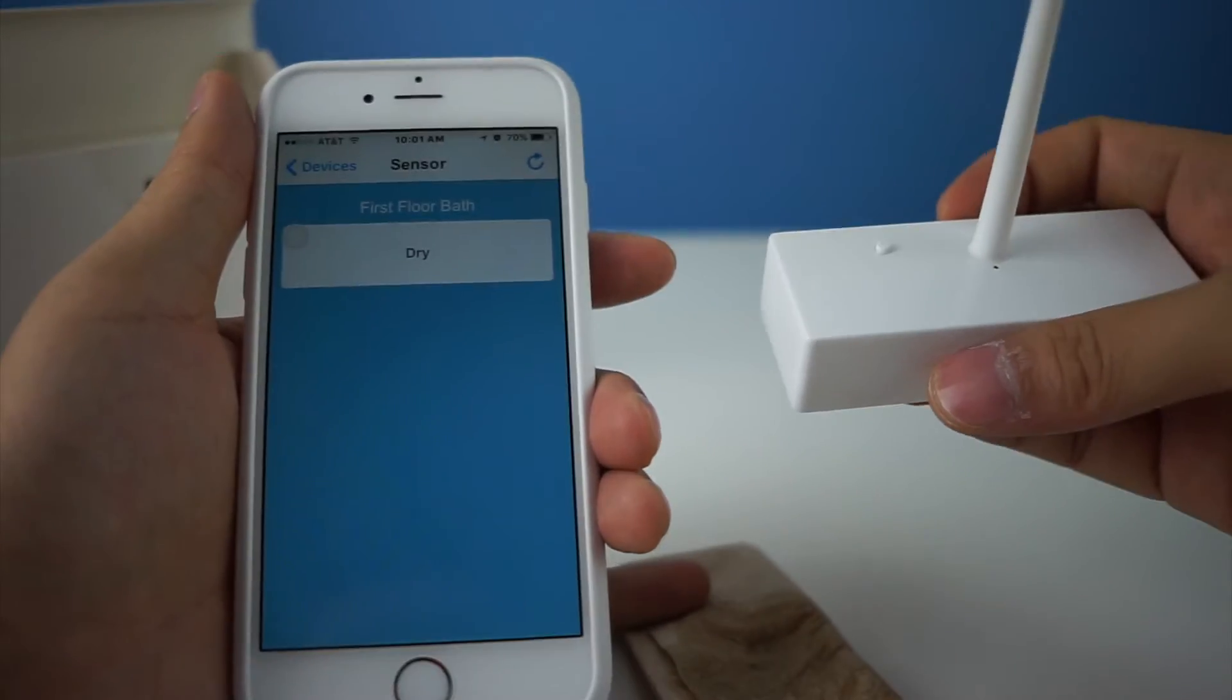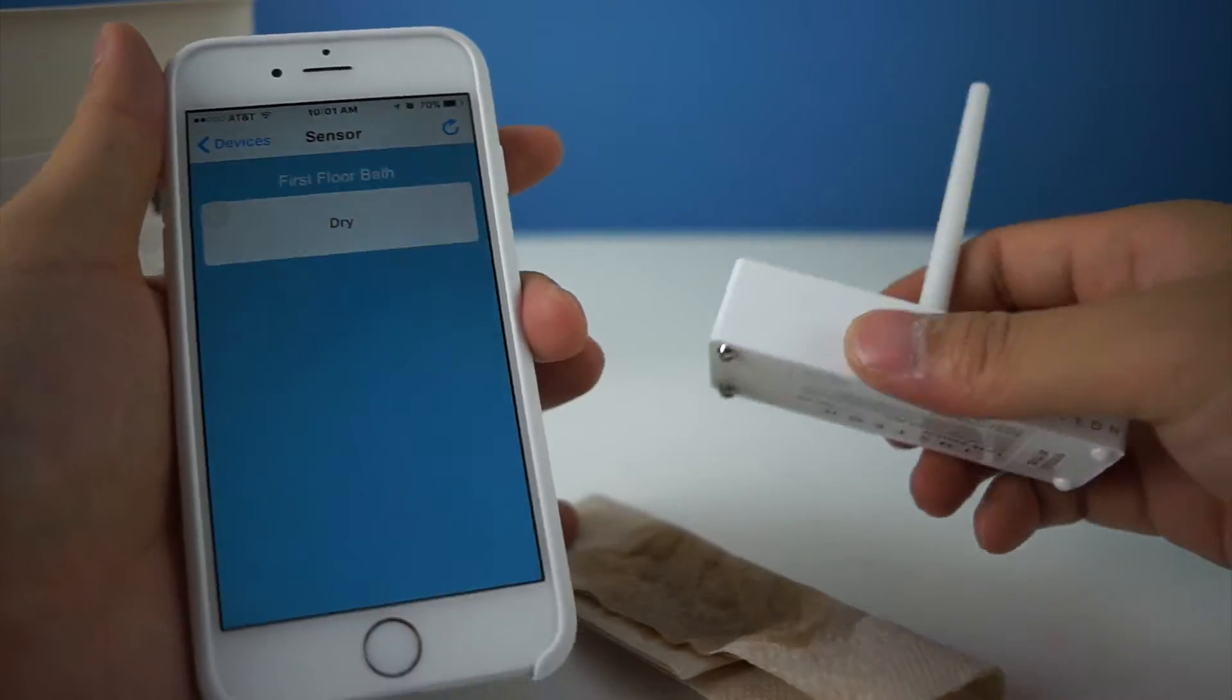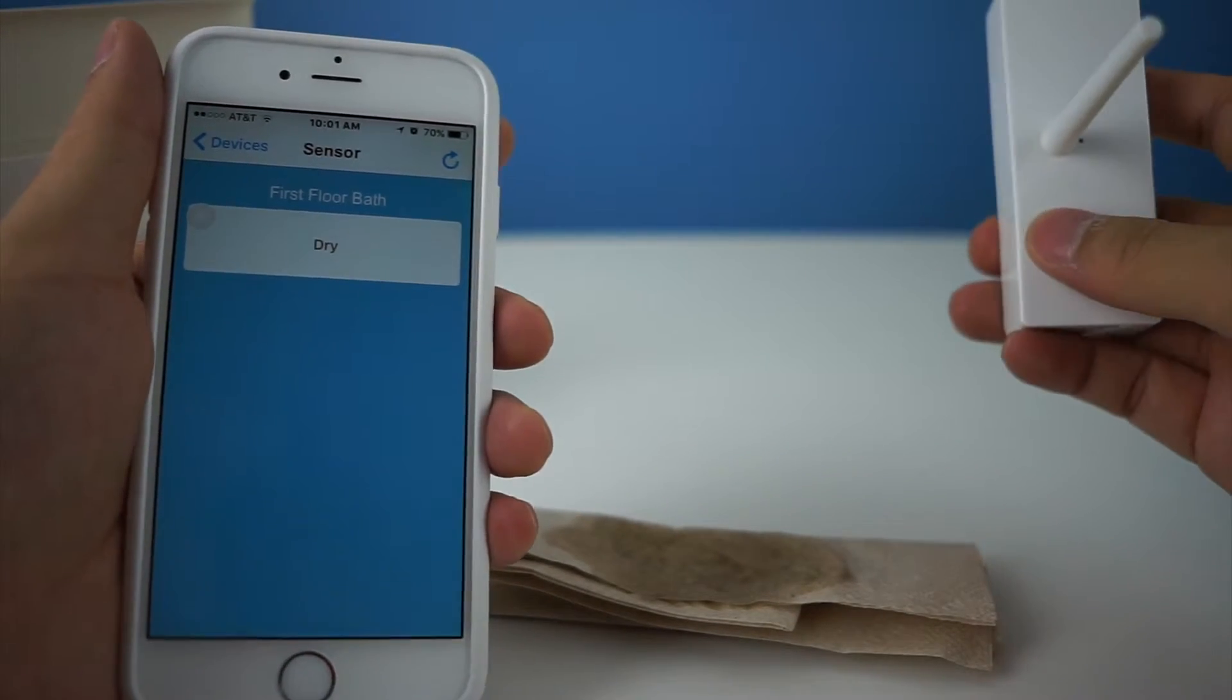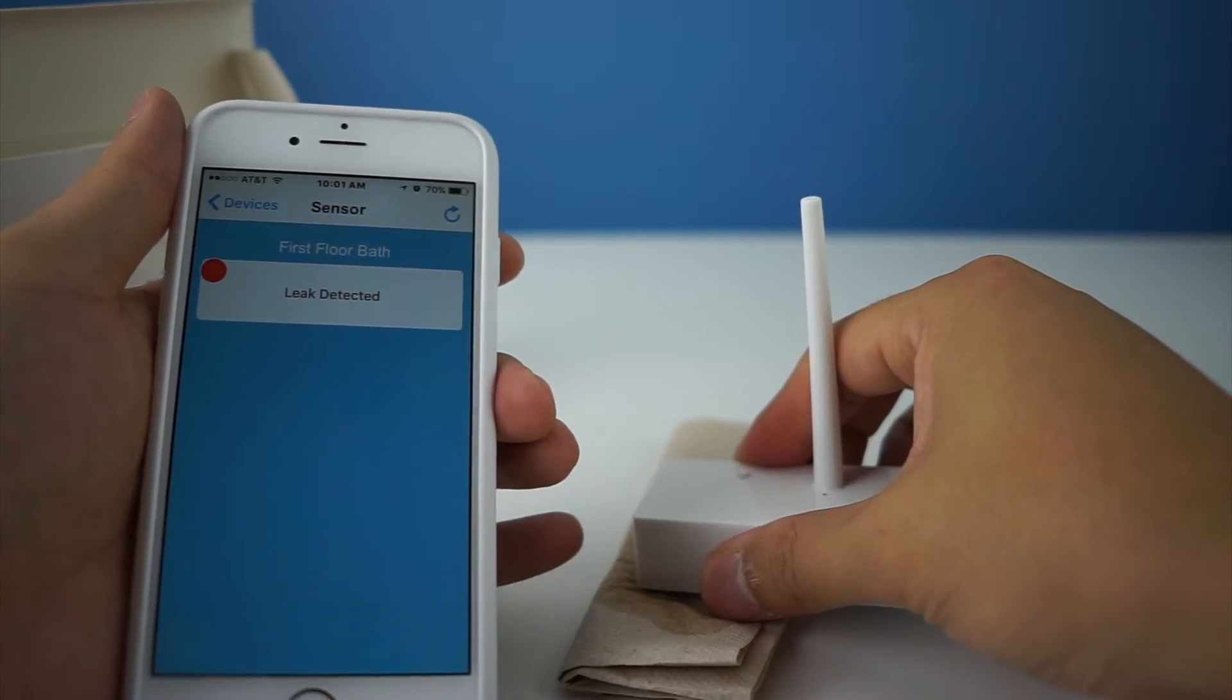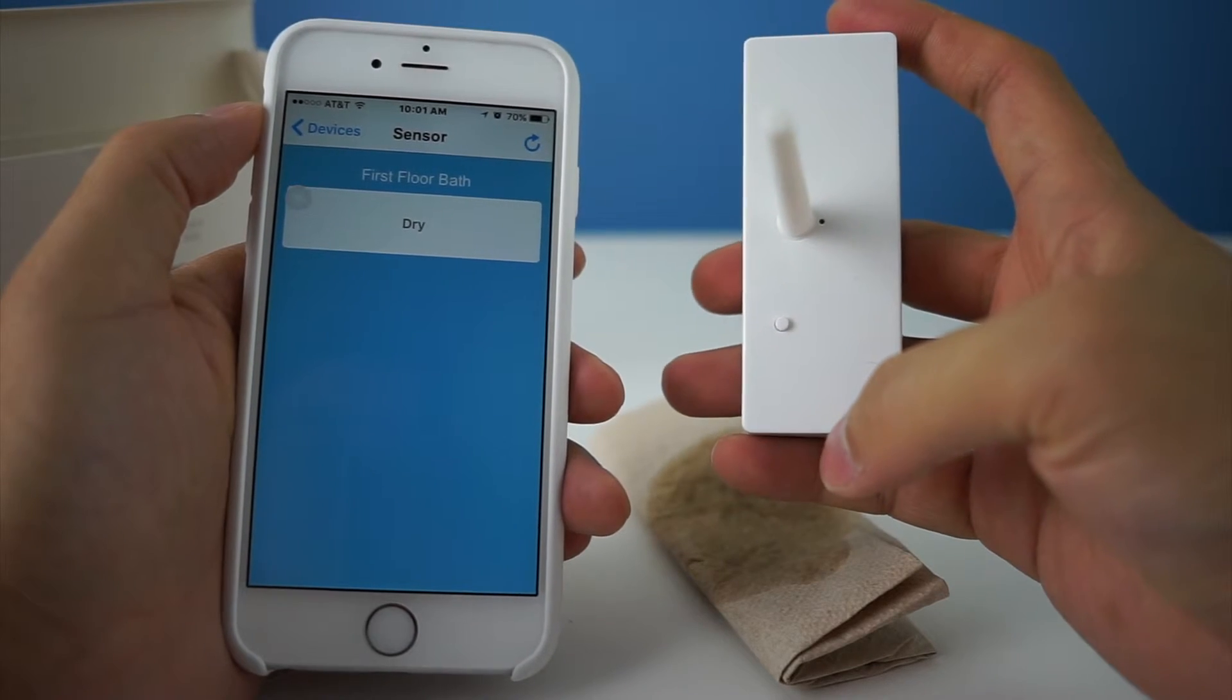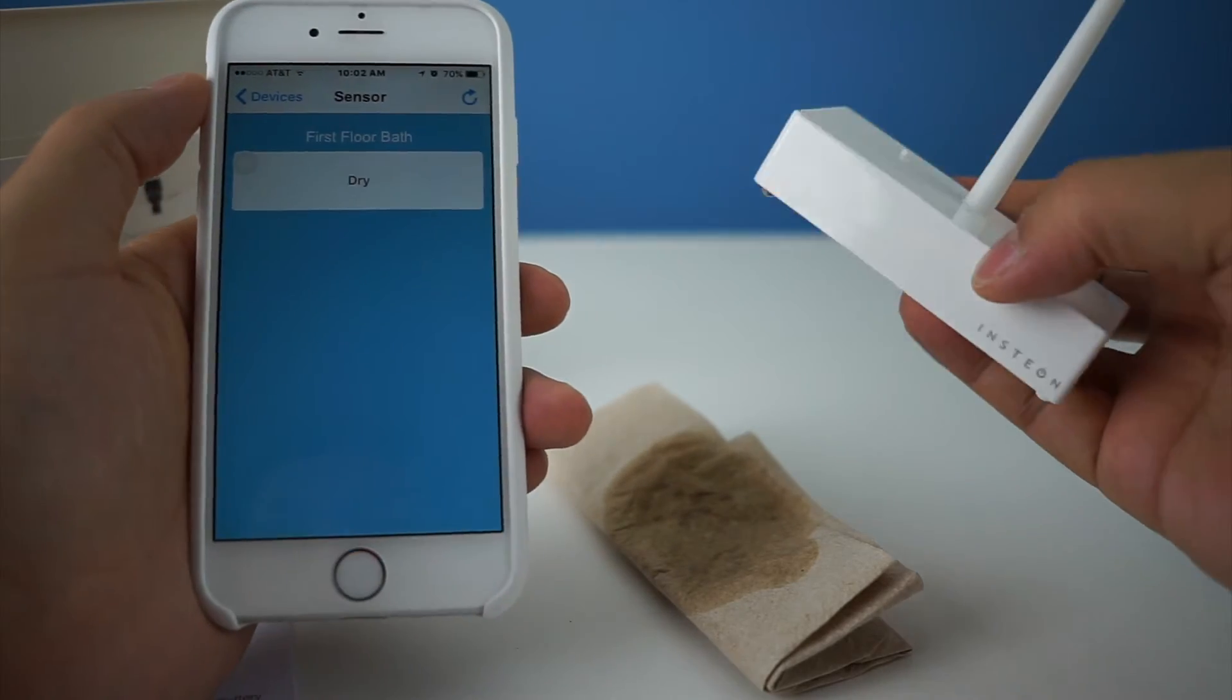Now it's not working. I reset it. Oh there it goes - it wasn't wet enough probably. Now I detected the leak again, press this to reset. So now you're ready to put this under wherever you plan to put it. I'm planning to put it at the first floor bathroom.